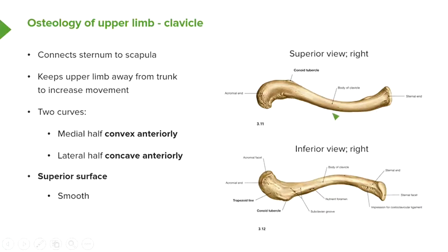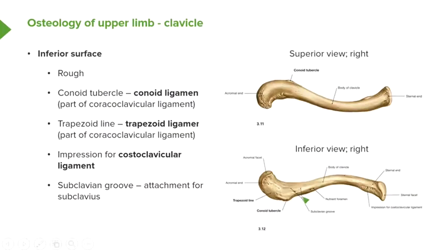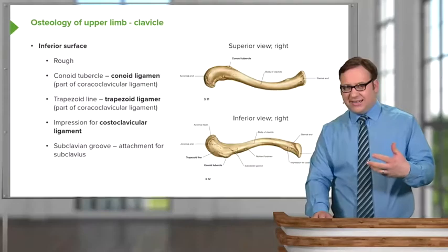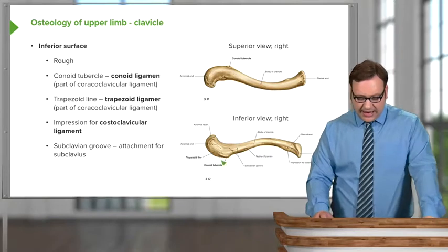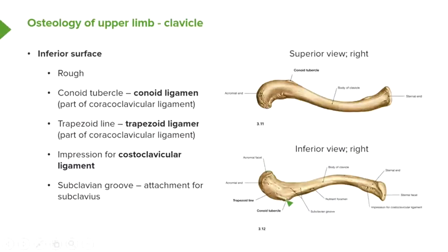Moving towards the inferior surface — as if we're standing underneath the clavicle and looking up — we can see that it's roughened. There's a whole series of tubercles and features important for articulation with ligaments. We have the conoid tubercle, located by the acromial end. This is part of the coracoclavicular ligament, which is an important stabilizing ligament of the shoulder, and we'll talk about it in more detail later.